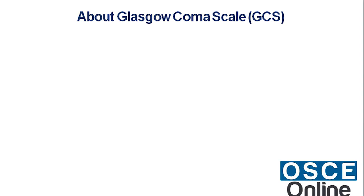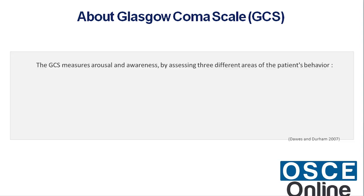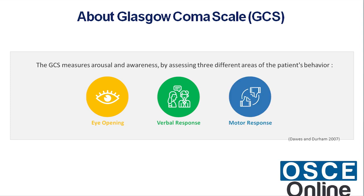The Glasgow Coma Scale (GCS) measures arousal and awareness by assessing three different areas of the patient's behaviour: Eye Opening, Verbal Response, and Motor Response.